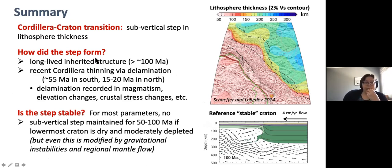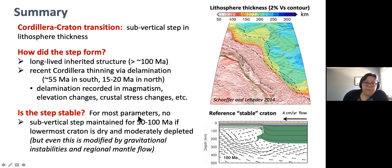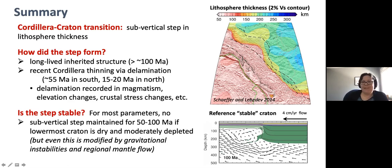By using numerical models, we can test these hypotheses. For example, if there was recent delamination, the models make specific predictions about observables associated with that process, which can be tested against observations. In terms of the stability of the step, most combinations of parameters do not keep the step stable - it's only a very narrow range of parameters able to maintain this structure for more than a few tens of millions of years. But even a stable step can be modified over time. With that, I'll stop talking and welcome any questions. Thank you for your attention.